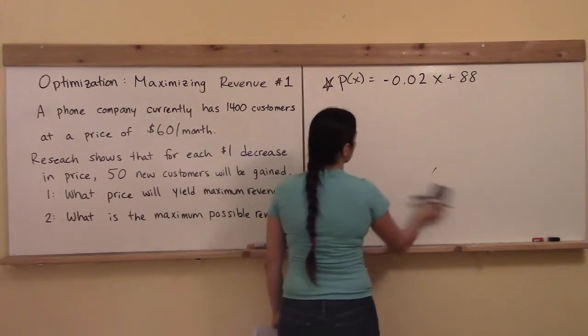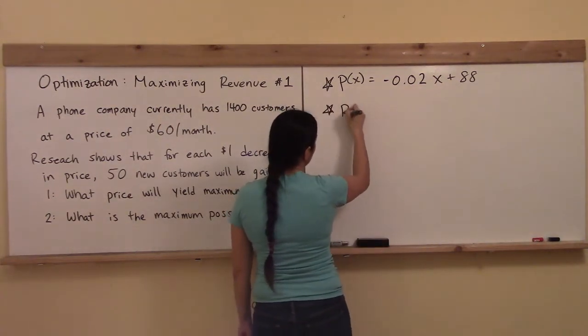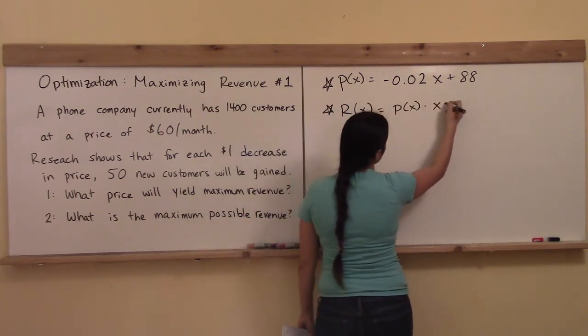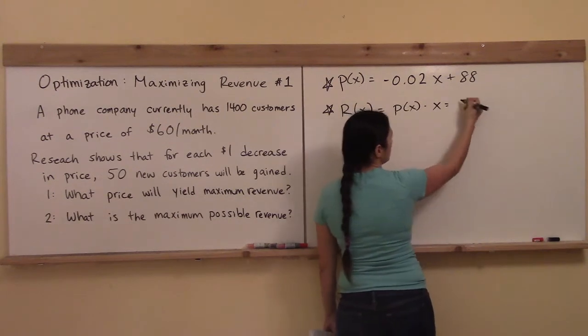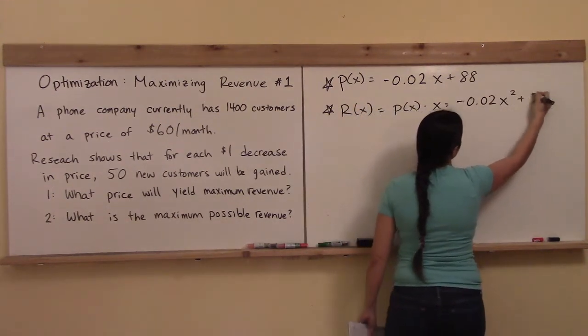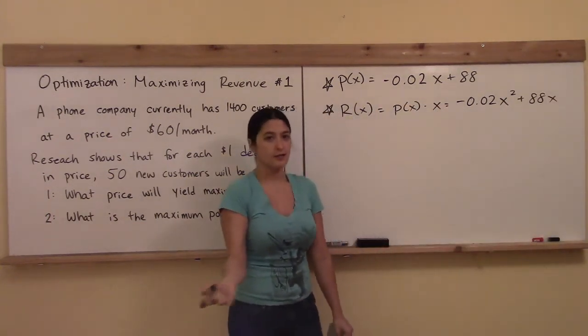Okay, cool. So the next step's actually a pretty simple step because the second part of my strategy was form the R(x) function, which is P(x) times x. And so if I take this function right here and multiply it by x, then that x becomes an x squared, and the 88 becomes 88x like that.